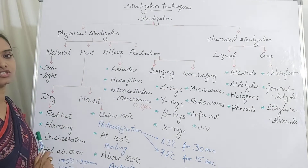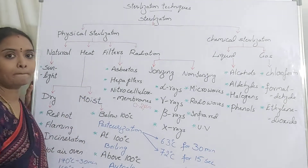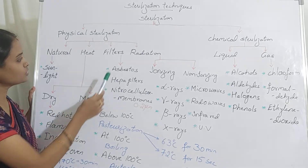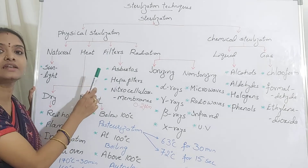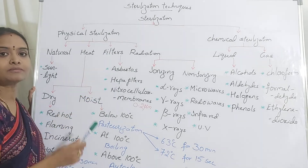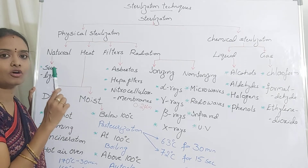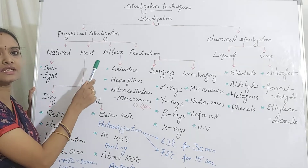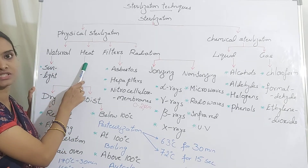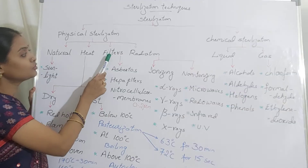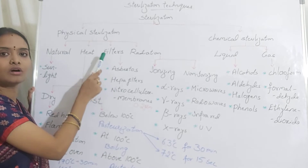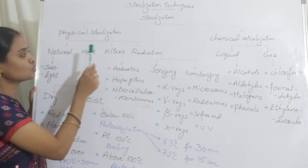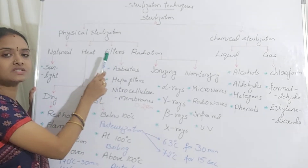Next is filter sterilization. We use different fibers or membranes to sterilize liquids, particularly heat-labile compounds. Compounds or nutrient media that are very sensitive to heat cannot be sterilized using heat sterilization. Therefore, filters are used to avoid the denaturation of proteins due to heat. Heat-labile compounds must always be sterilized using filters.